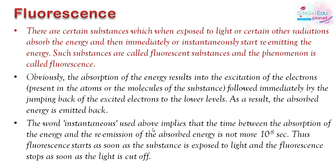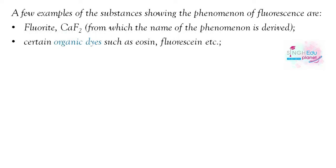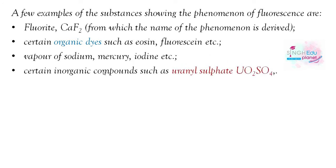Some examples of fluorescence: fluorite, calcium fluoride (CaF₂), shows fluorescence — the phenomenon is actually named after fluorite. Some organic dyes like eosin are fluorescent. Some vapors like sodium, mercury, and iodine show fluorescence. And inorganic compounds like uranyl sulfate (UO₂SO₄) — this is a photosensitizer and also shows fluorescence.